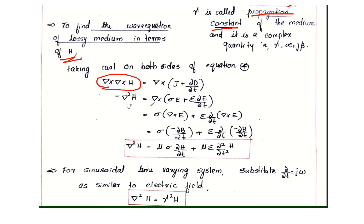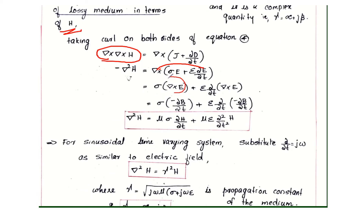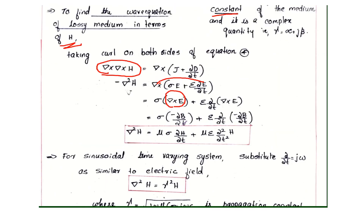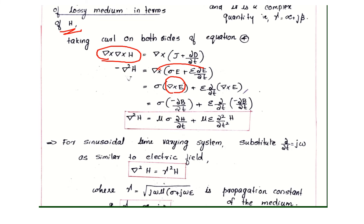With D equals epsilon E, this becomes del cross (sigma E) plus epsilon partial by partial t. Del cross E is present here. Del cross E equals minus partial B by partial t, so substituting minus partial B by partial t. All terms simplify and the negative signs work out. Del squared H equals sigma mu partial H by partial t. Since del cross E gives B equals mu H, and again B equals mu H, we get plus mu epsilon partial squared H by partial t squared.